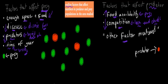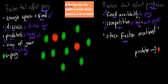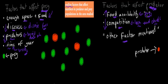Other factors mentioned for prey also apply to predators — things like disease and time of year. Additionally, predators themselves may have predators. For example, a rabbit can be a predator eating a grasshopper, but a hawk might eat the rabbit. So predators also need to account for their own predators — the more predators they have, the lower their numbers.